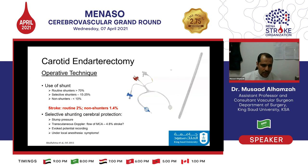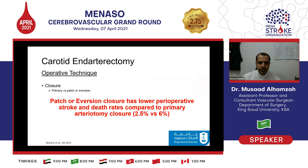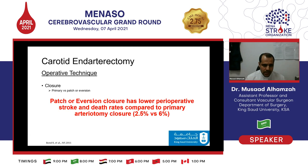Regarding outcomes, routine shunters have a 1.4% perioperative stroke rate compared to a 2% stroke rate for non-shunters. As for closure, primary closure of a longitudinal arteriotomy will definitely lead to stenosis and re-stenosis, versus patch closure or eversion. Eversion now has a lower rate of re-stenosis even compared to patch closure. Both eversion and patch closure have lower perioperative stroke and death rates compared to primary arteriotomy closure, which is why patch closure is now standard of care when using the conventional technique.